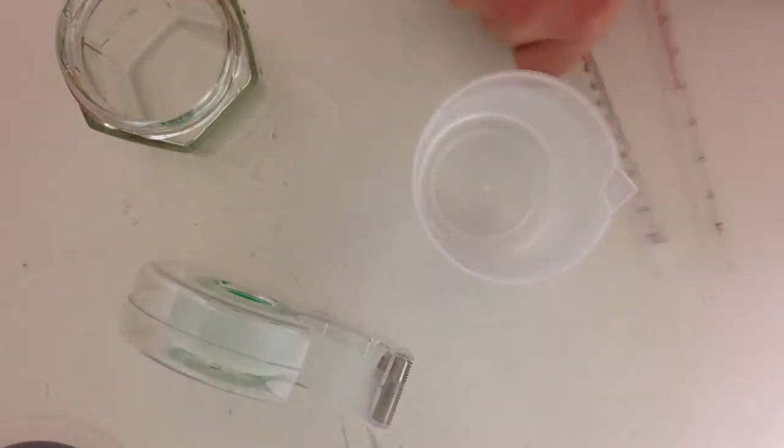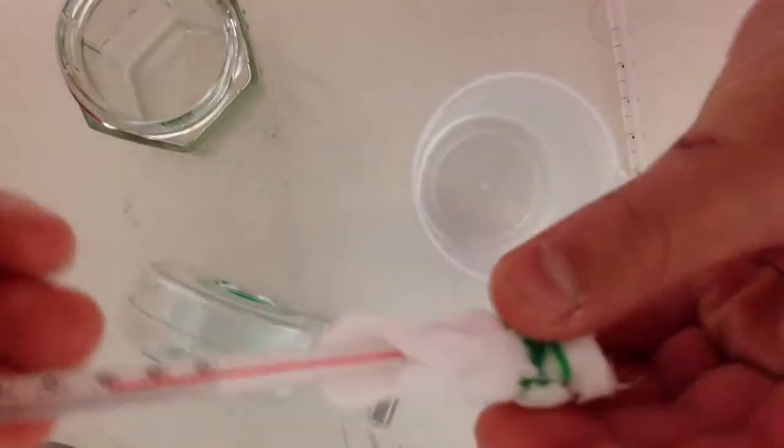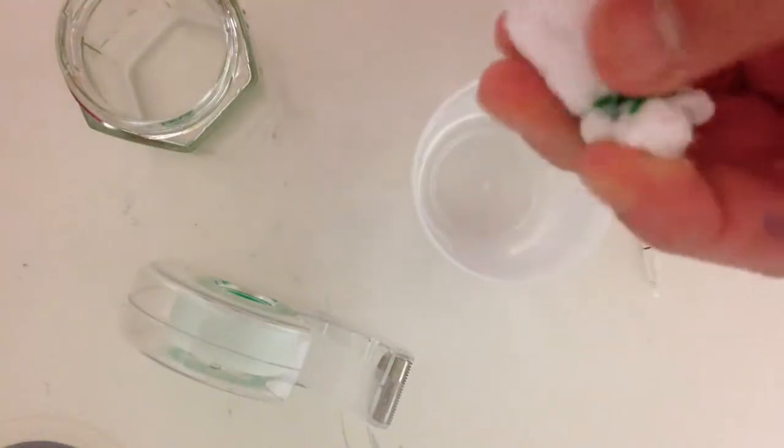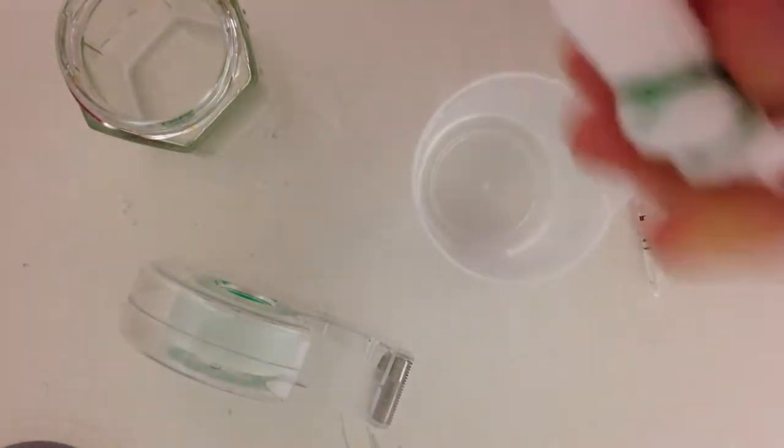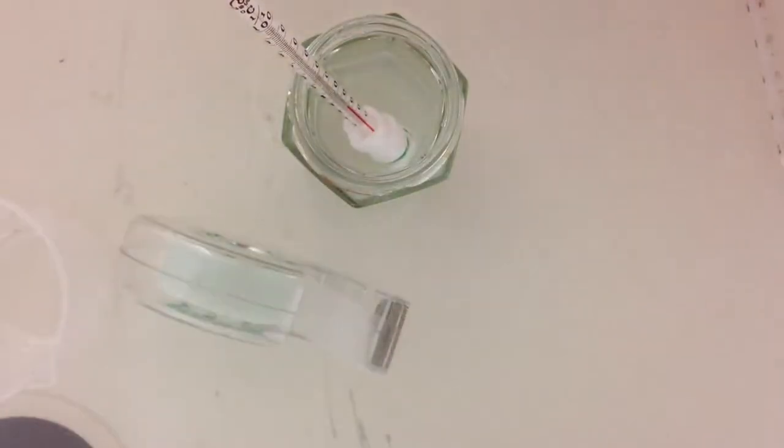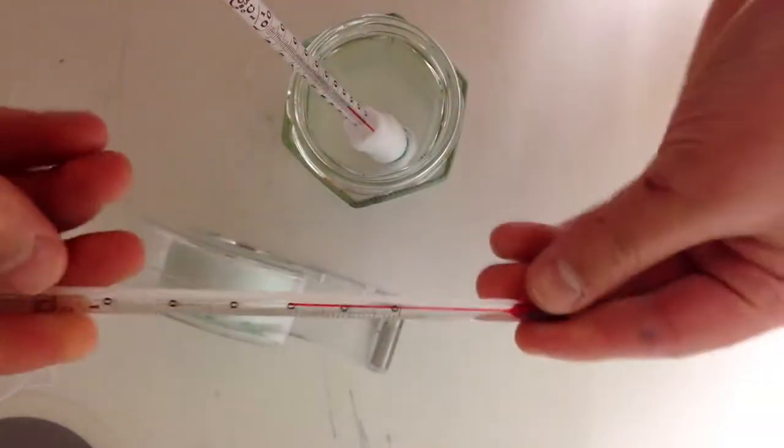So first, use one of the thermometers. Just wrap the gauze around the thermometer a few times. Then put water in the jar and put the thermometer with the gauze inside.